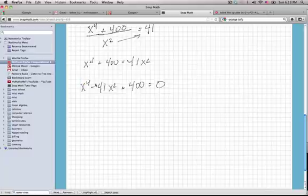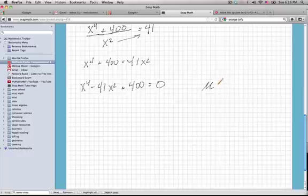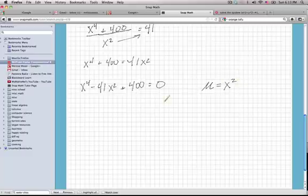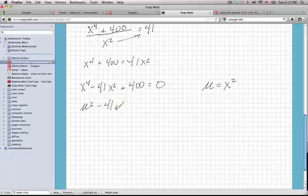Now we want to turn this into a quadratic equation, and we can do that by using a u substitution. Let's let u equal x squared so that this turns into u squared minus 41u plus 400 is equal to zero.